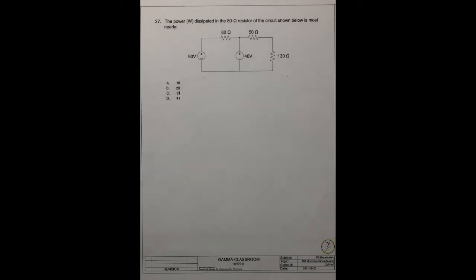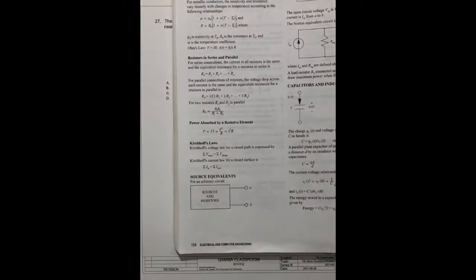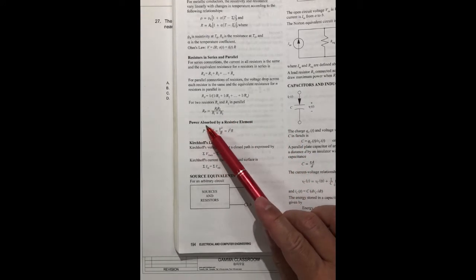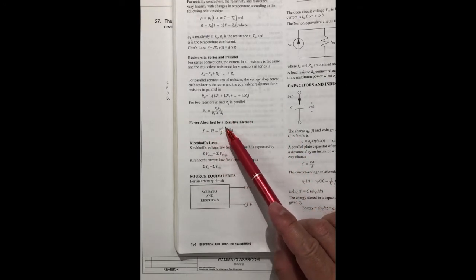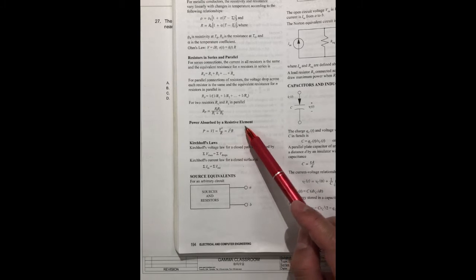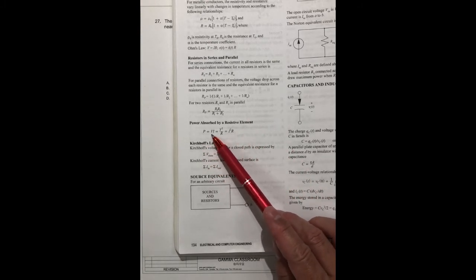We know the formula in the FE handbook, on page 194. The power absorbed by a resistive element, P equals VI.